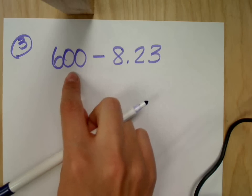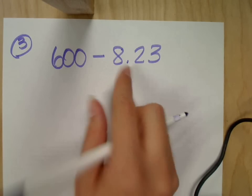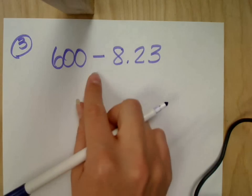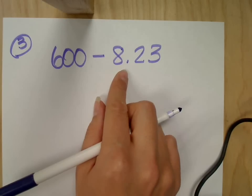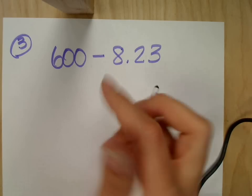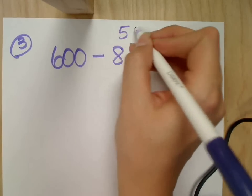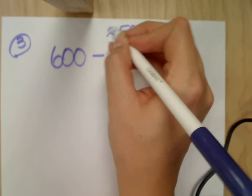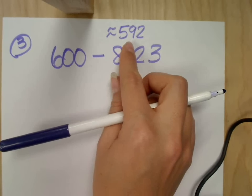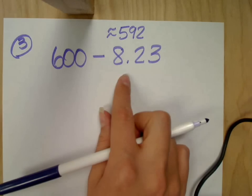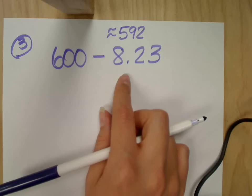If I have 600 and I'm taking away like 8, what's 600 take away 8? 592, so an estimated answer is about 592. If I subtract and I get something totally different, then I know I've made a mistake.